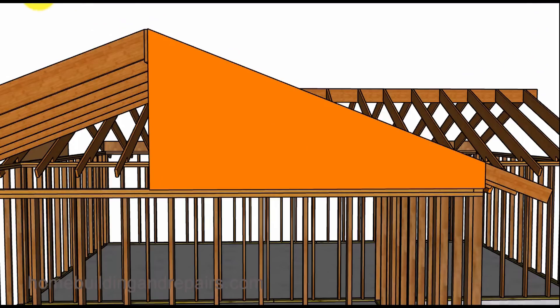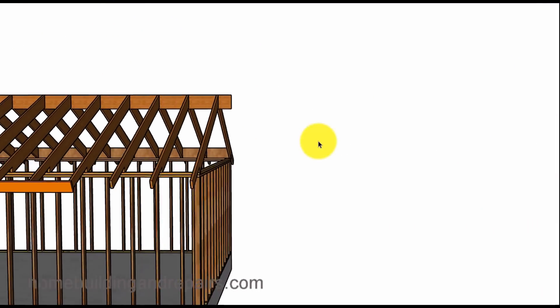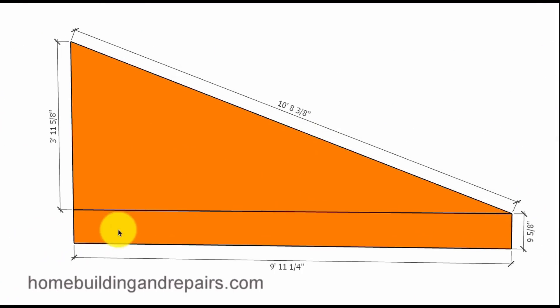Once we have our measurements we can do our math. Again we are going to stay with the nine and five-eighths here and the height here will still be the same. We want our ridge to line up. The only difference will be the length of the rafter and the span for the rafter.